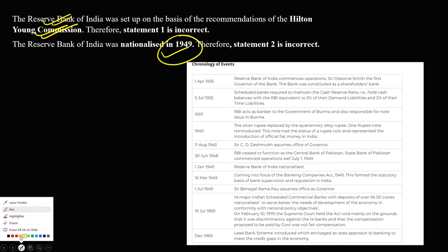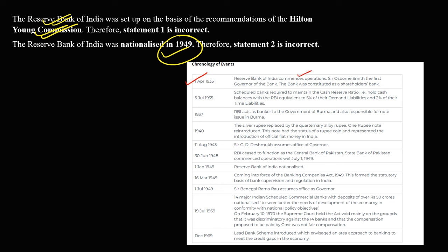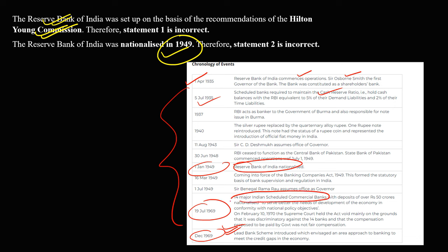Here is a chronological timeline of important RBI events. On 1st April 1935, RBI commenced operations and Sir Osborne Smith was the first Reserve Bank Governor. In 1935, the Cash Reserve Ratio was introduced. In 1949, RBI was nationalized. In 1969, the lead bank scheme was introduced and 14 major commercial banks were nationalized. Nationalization of banks is very important. Also, C.D. Deshmukh was the first Indian RBI Governor in 1943 — Sir Osborne Smith was the first governor but he was not Indian.